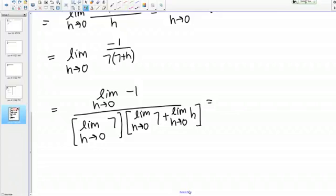On top I've just got the limit of a constant, so that's just going to be negative 1. On the bottom, once again the limit of a constant, just the limit of a constant 7, so that's just going to be 7, and then 7 again plus the limit as H goes to 0 of H is just 0.